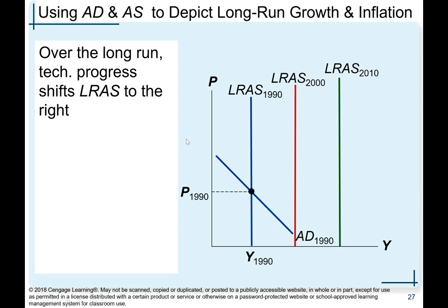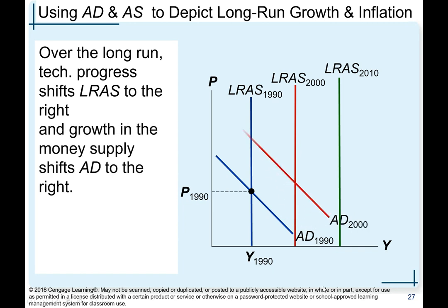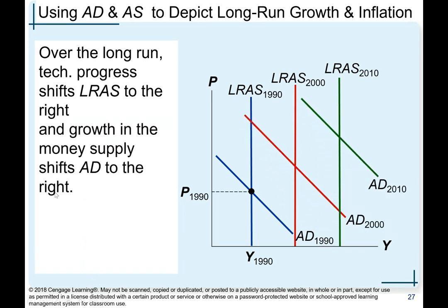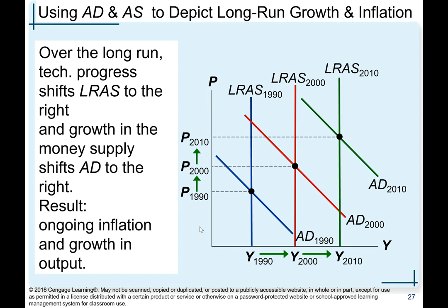Using the AD-AS model to depict long-run growth and inflation: over the long run, technological progress shifts the long-run aggregate supply to the right — for example from 1990 to 2000 to 2010 there is technological progress, immigration, and increased capital shifting LRAS right. Growth in the money supply shifts aggregate demand to the right. Over that period, prices have gone up — some inflation is built in. The result is ongoing inflation and growth in output.